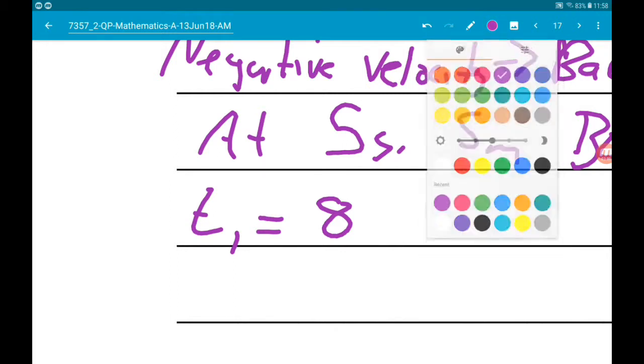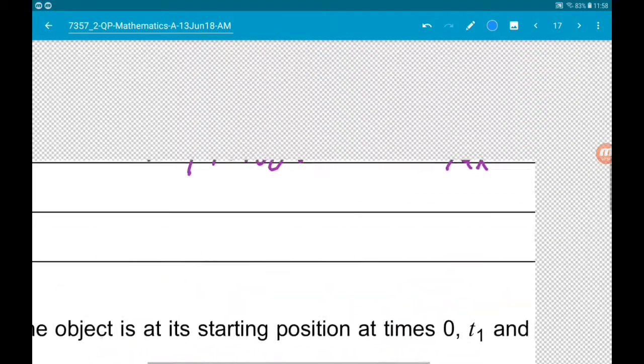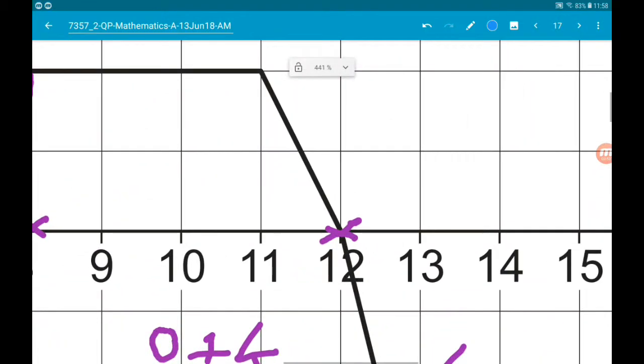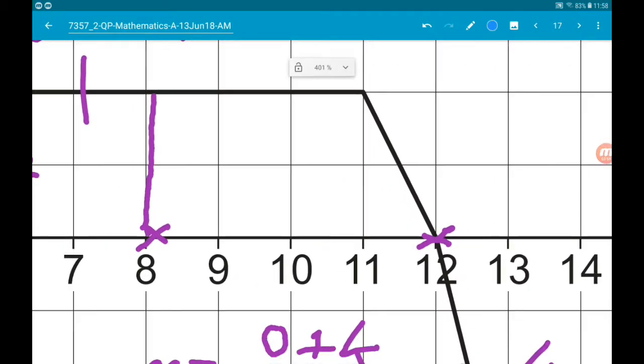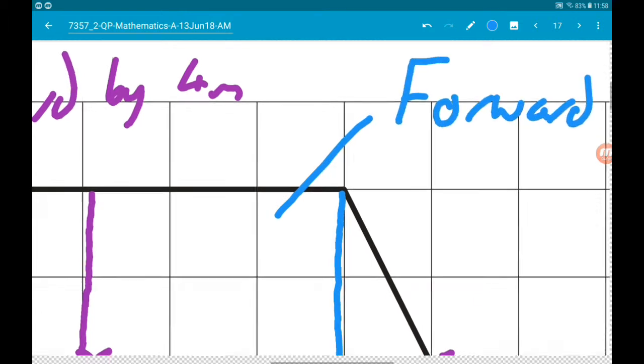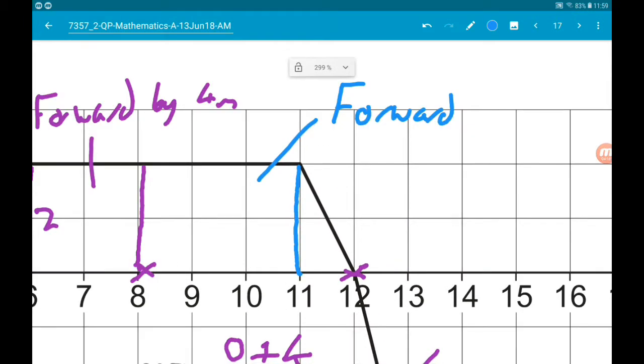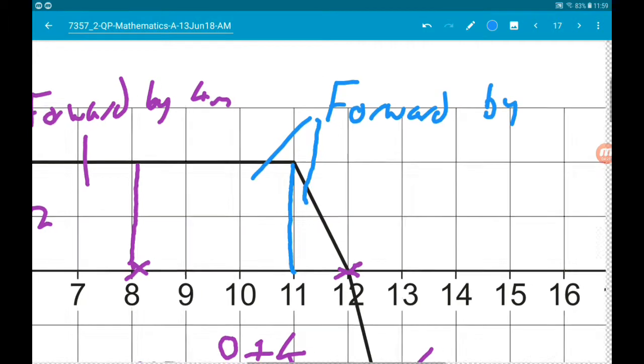Okay, so then from that we are continuing to go forward. So the area of this rectangle, it's going to be 3 times 2, so this is forward by 6. Although if we also add in the triangle, the triangle is going to have an area of 1 times 2 over 2, which is 1. So if we combine those, we're going forward by 7 meters.